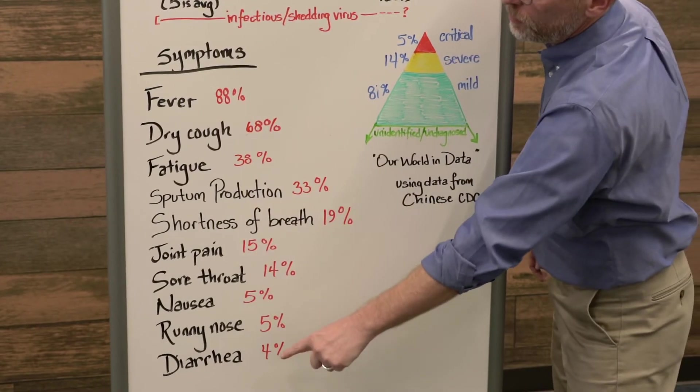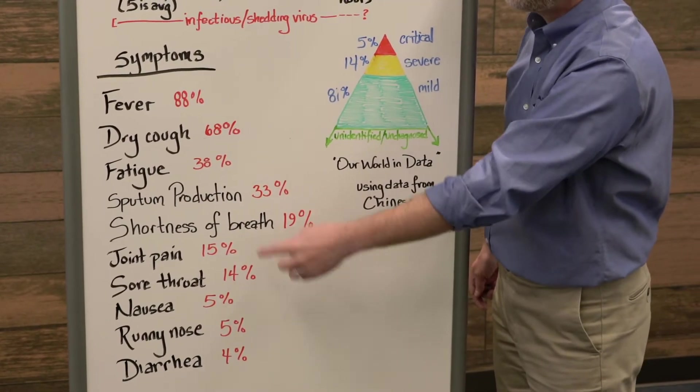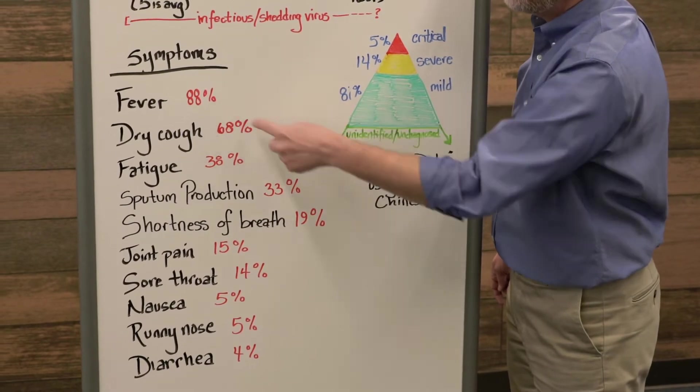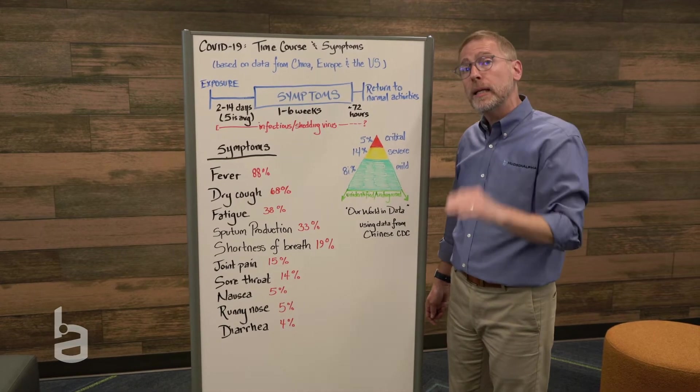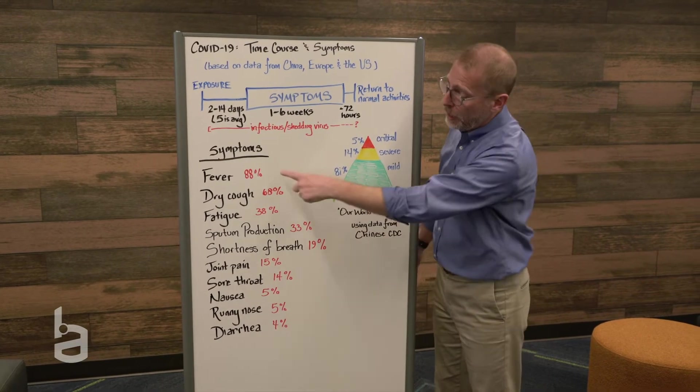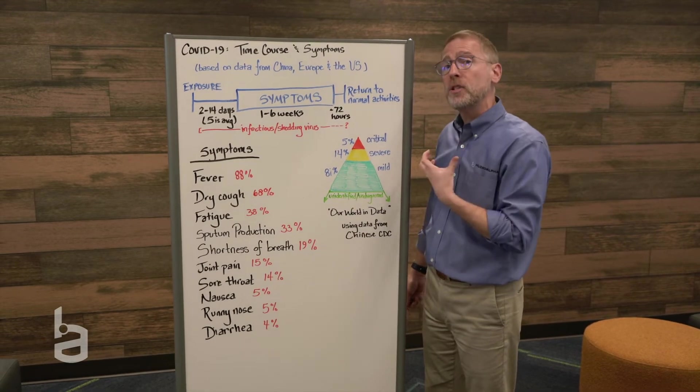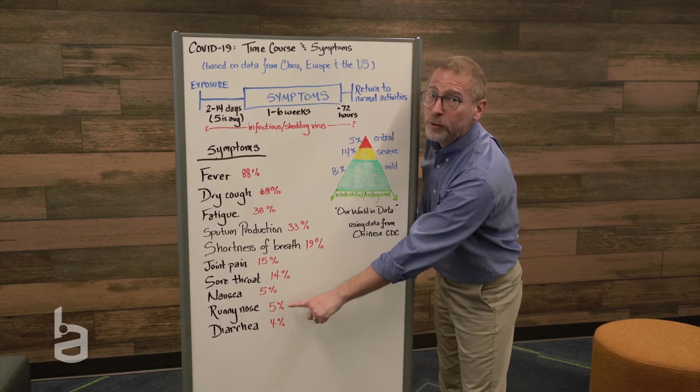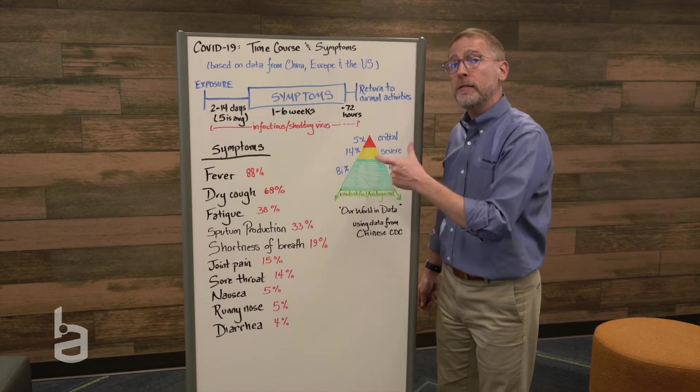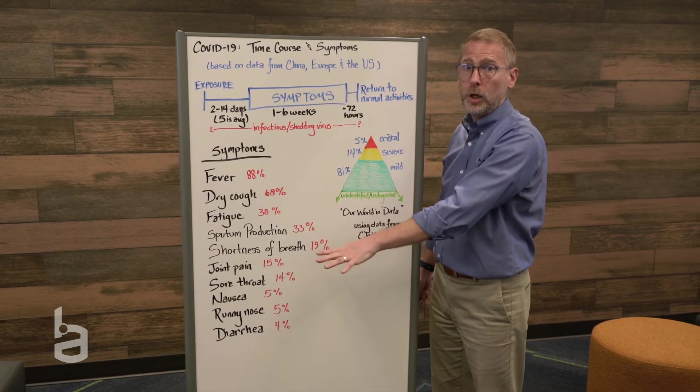Here's a set of symptoms and the frequency of those based on the data from China. Key thing: fever and dry cough. Those are the most common. The fever can be continuous or it can come and go, it can be intermittent. I also want to note that only about a third of the individuals are actually coughing up something from their lungs and that only about 5% have the sniffles. So that is a way to begin to differentiate allergies from something more serious like COVID-19.